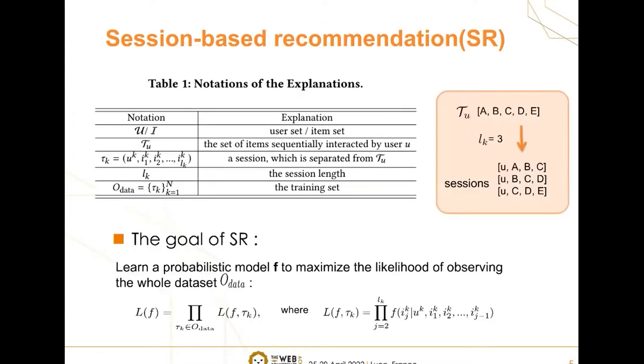More formally, session-based recommendation aims to learn a probabilistic model F, taking the user and previously interacted items as input. F will output the probabilities of interacting with the candidate items, and it is learned by maximizing the likelihood of observing the whole dataset.